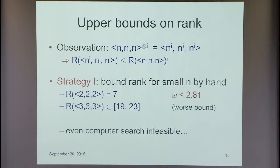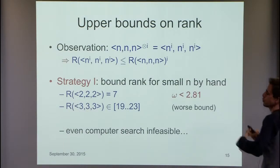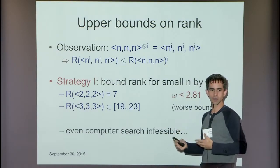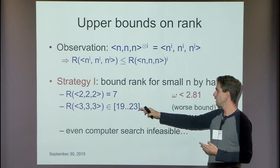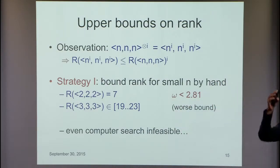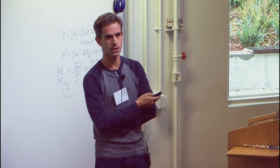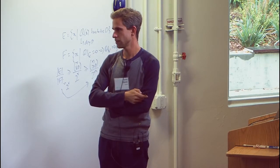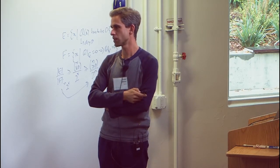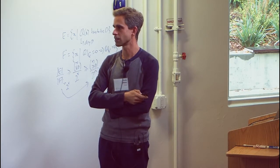By now shouldn't we be able to do computer searches? Without further information, symmetries, or cleverness, it's really infeasible. For a 3×3 case you have a 9×9×9 tensor, and even looking for zero-one decompositions into low-rank tensors is a prohibitively large search space. This is where things seem to be stuck.